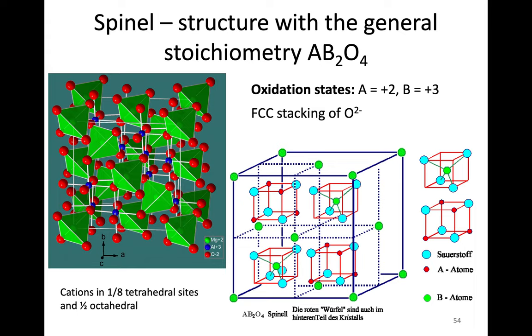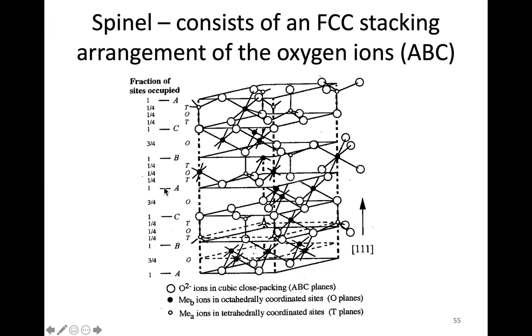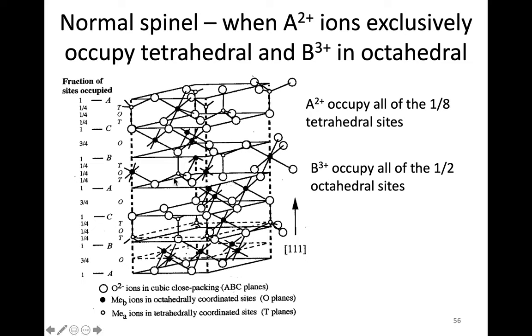This is what we would refer to as spinel or normal spinel. This is showing us the stacking of the FCC, albeit I don't believe it shows it in a great way to show you the stacking of those oxygen ions. But what I wanted to show you here is that the spinel or normal spinel (because there's actually two different types) is when we have the A sites exclusively in the tetrahedral and the B sites exclusively in the octahedral.